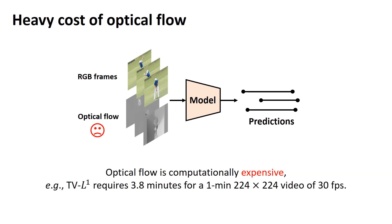However, the gains come at a cost. The optical flow is computationally expensive. For example, the most commonly used TVL1 requires 3.8 minutes for a 1-minute video at 30 fps with a resolution of 224×224.